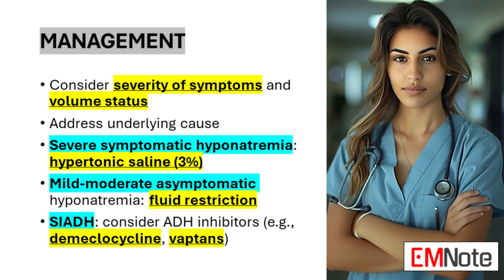Euvolemic hyponatremia, often caused by SIADH, typically requires treatment of the underlying cause and may benefit from fluid restriction or pharmacological interventions. In cases of SIADH, in addition to free water restriction, medications that inhibit ADH action — such as demeclocycline or vaptans — may be considered. However, these medications should be used judiciously due to their potential to cause rapid sodium correction and associated complications.